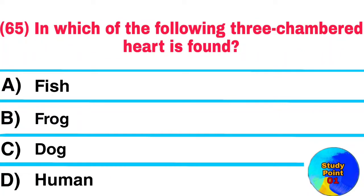Question No. 65. In which of the following is a three-chambered heart found? Answer: Frog.